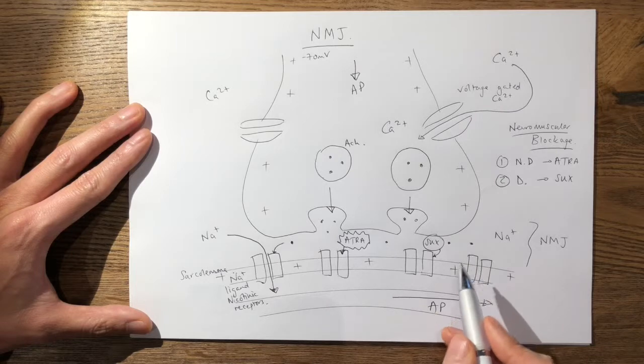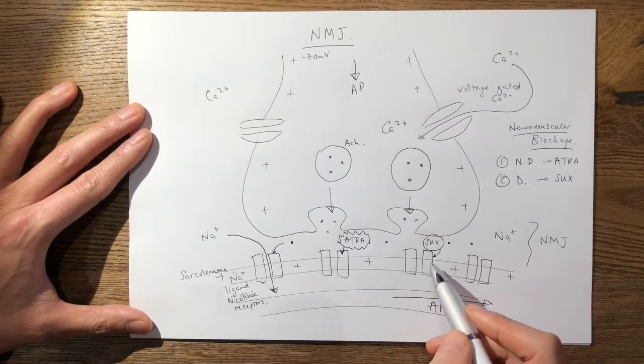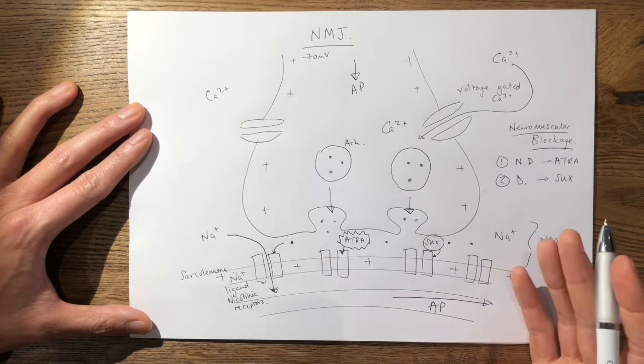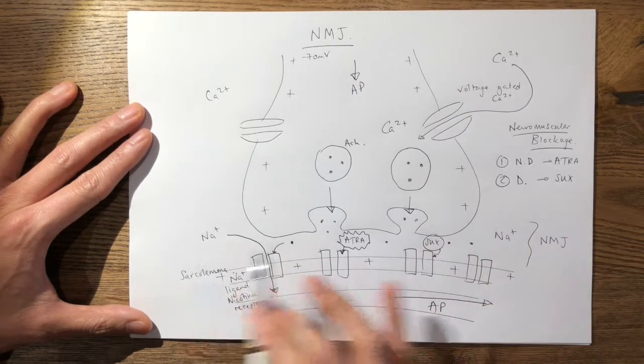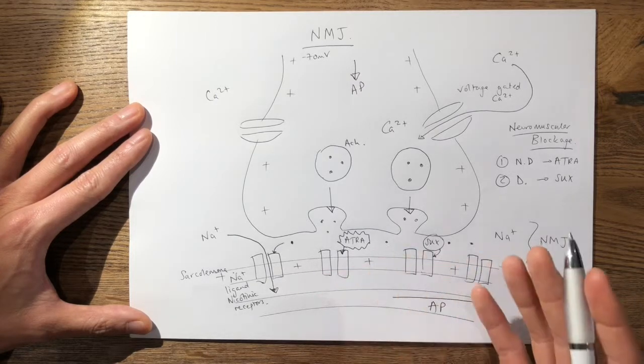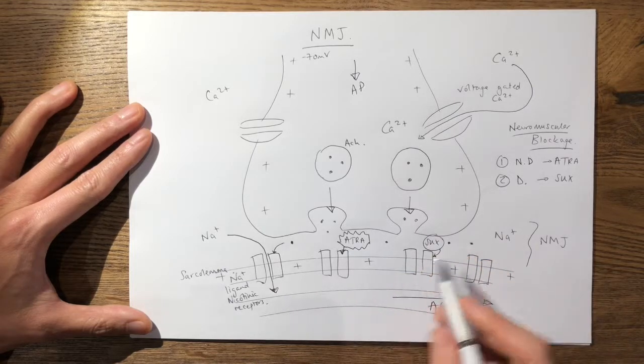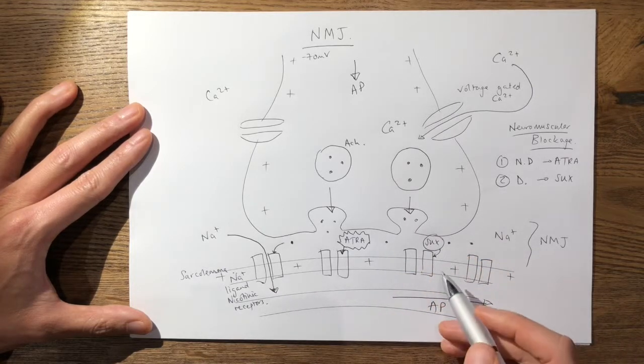So that's called the desensitization phase when you desensitize the whole sarcolemma. It's only in the desensitization phase where you get the full paralysis of the muscle when using suxamethonium.